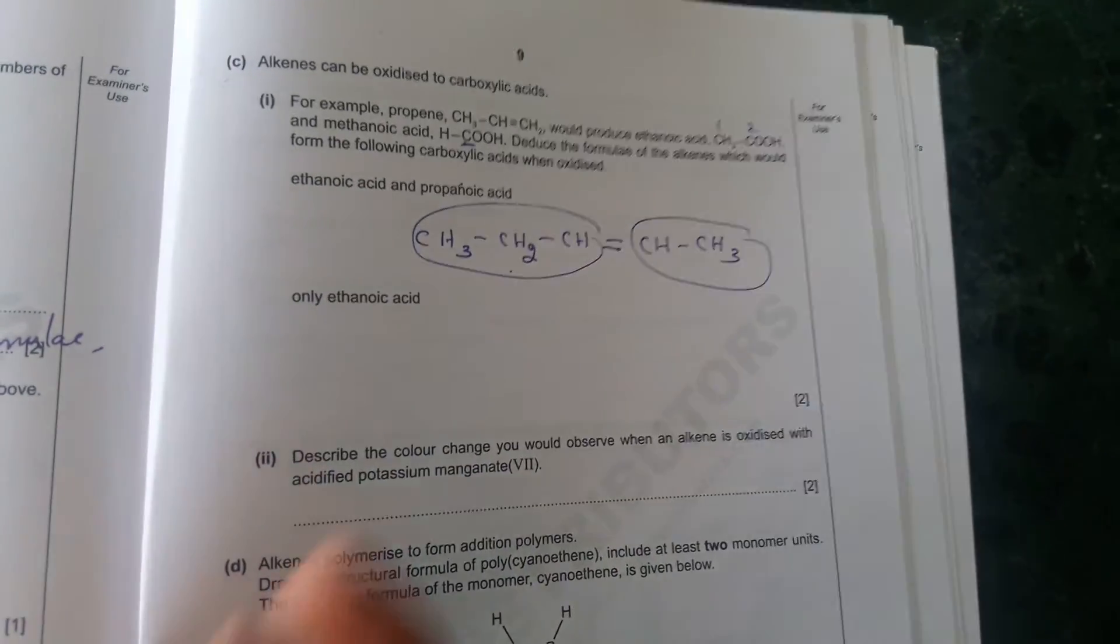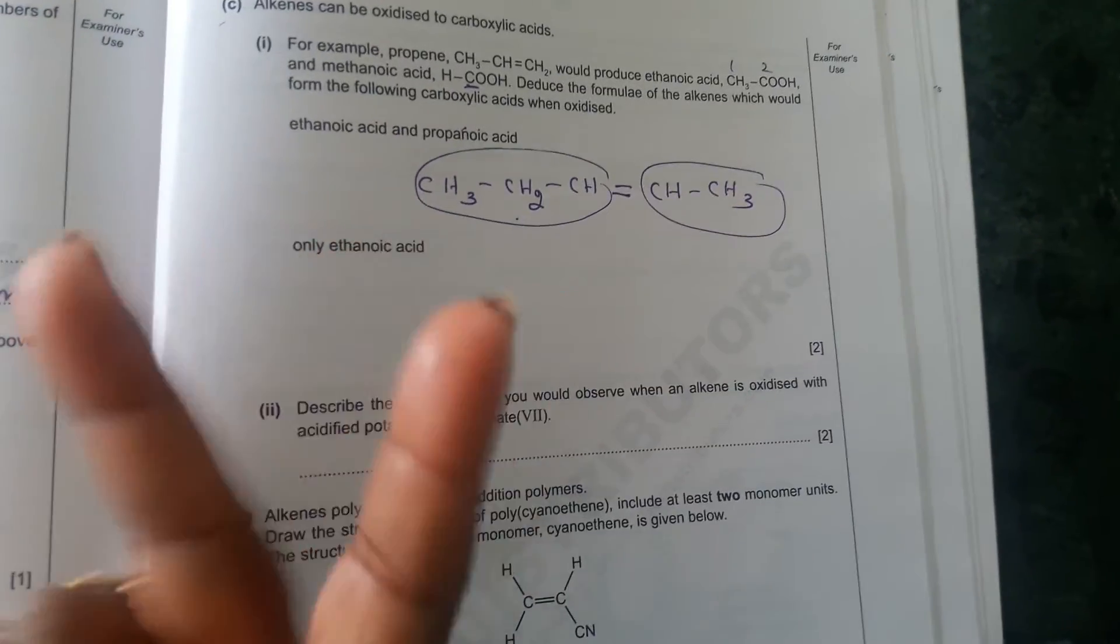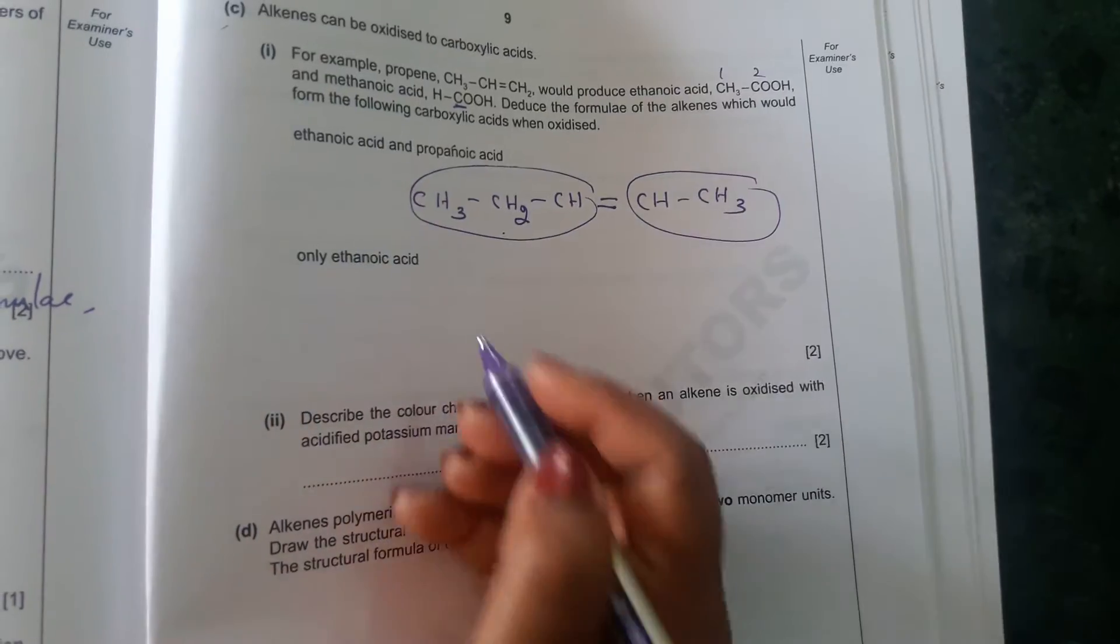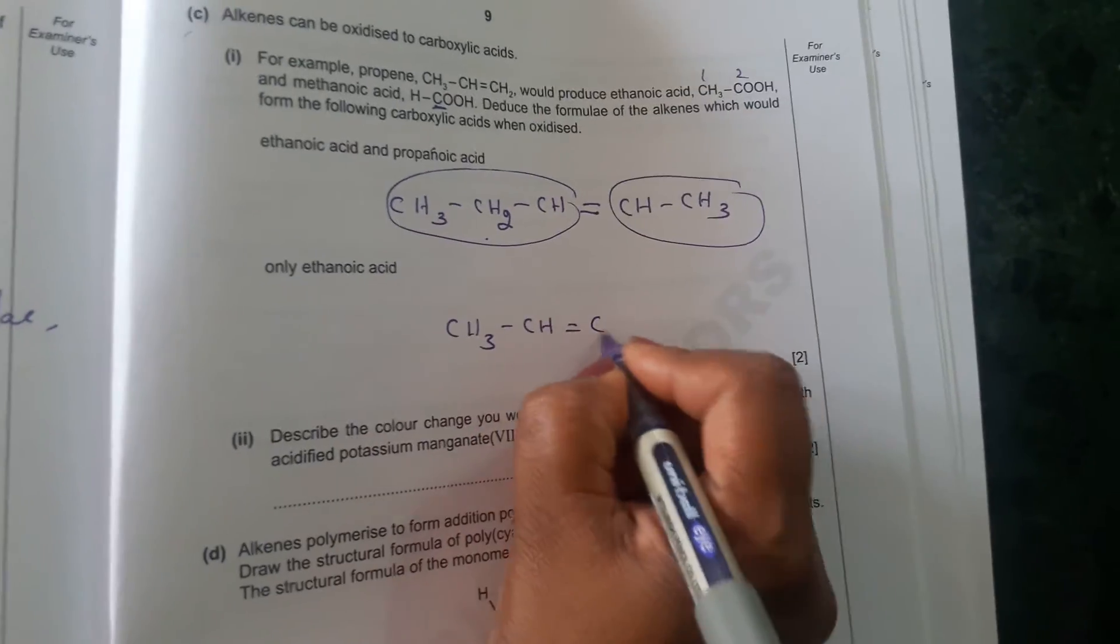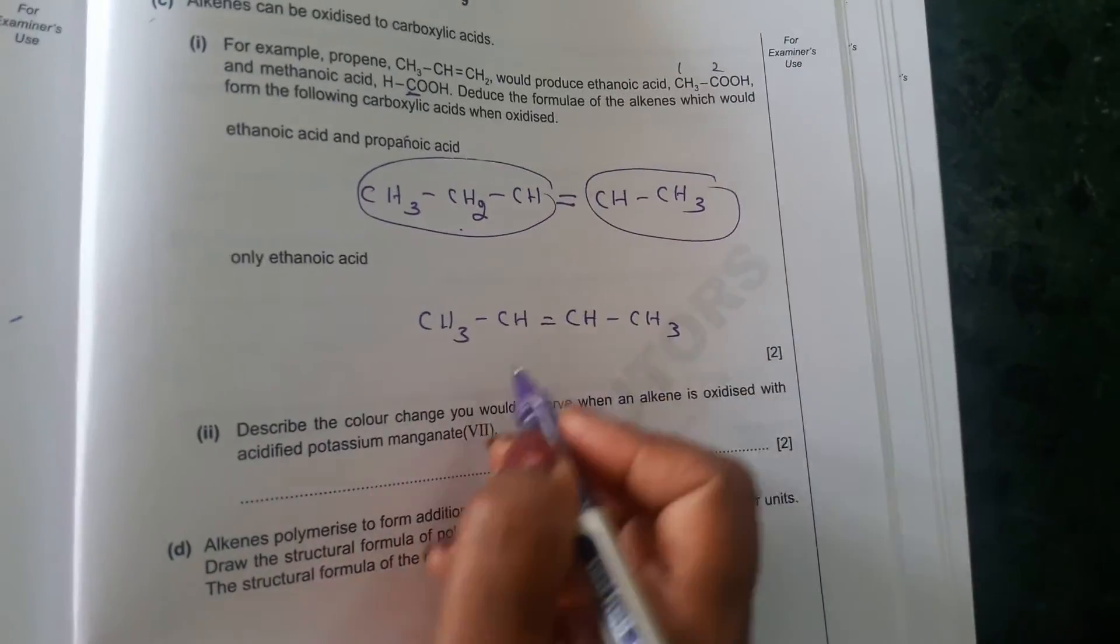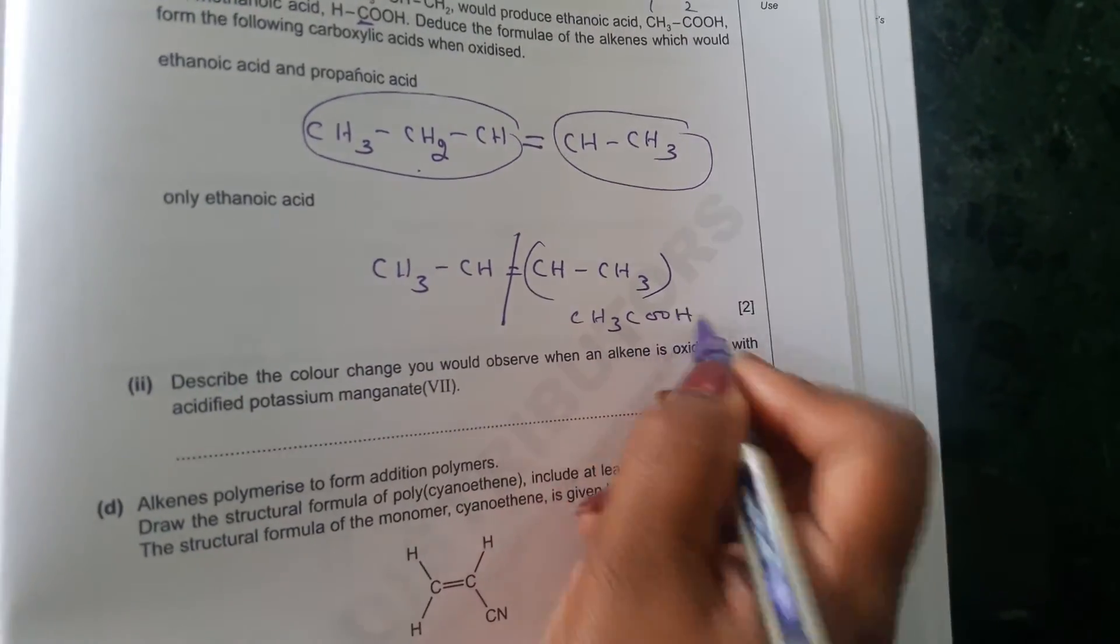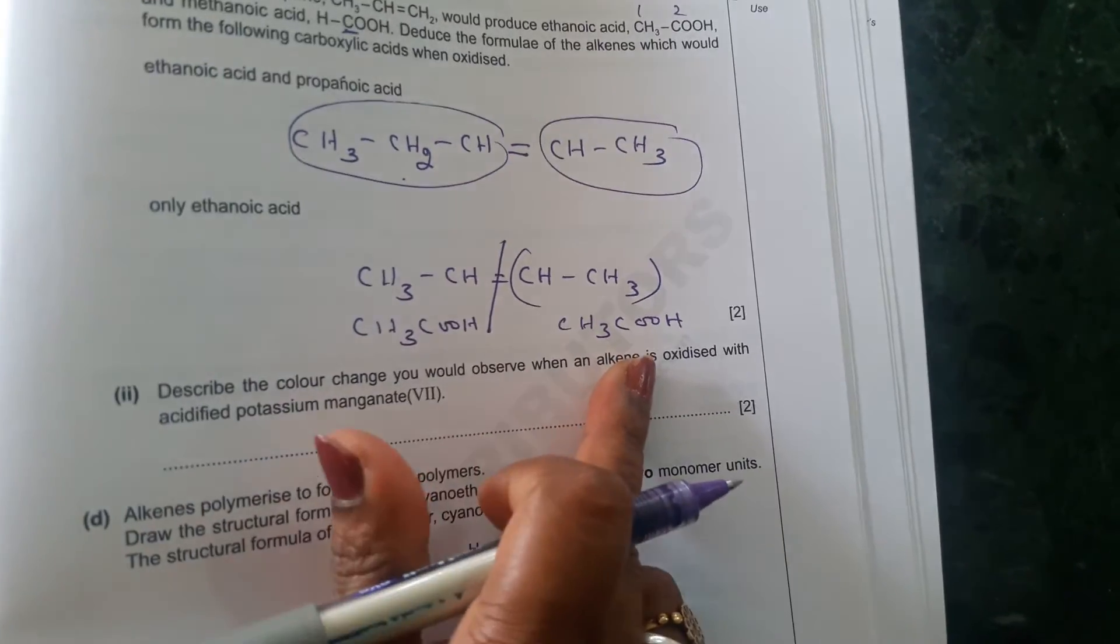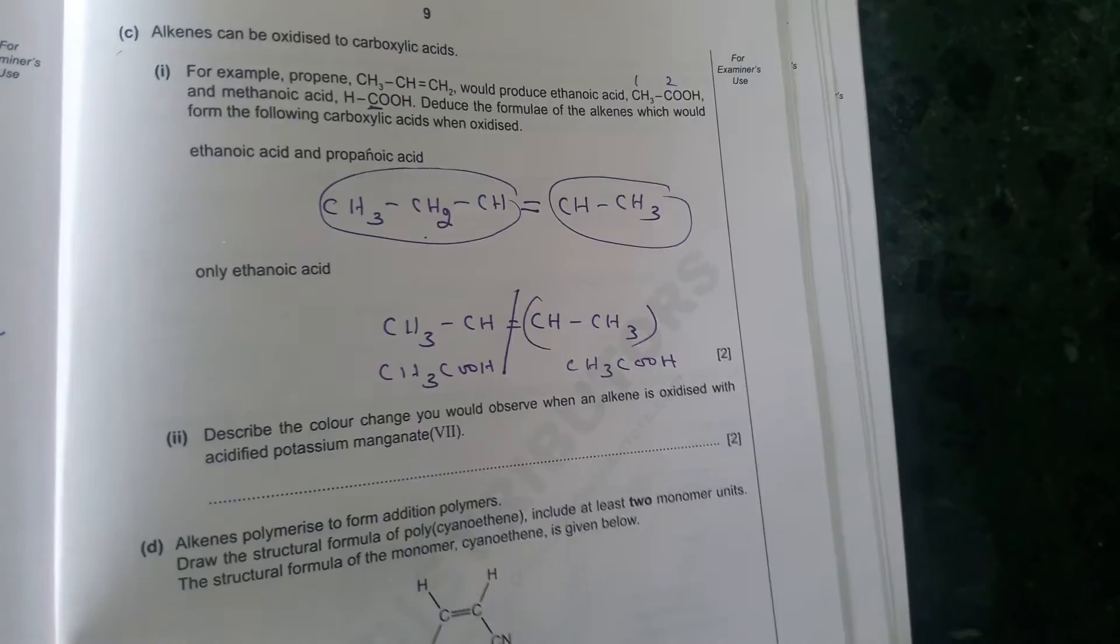So only ethanoic acid. When it breaks, how only ethanoic acid? Then it should be two, two moles of carbon atom. I mean that compound should have four carbon atoms. So in that case, you can write CH3, CH double bond CH, CH3. So now four carbon atoms. So when this breaks, this becomes ethanoic acid, CH3 COOH. And this also becomes CH3. So only ethanoic acid you will get by doing this, by taking this alkene.